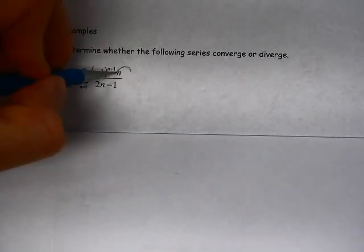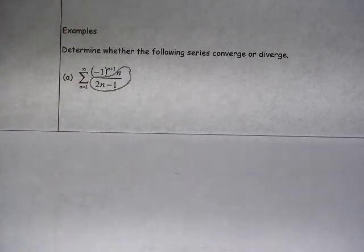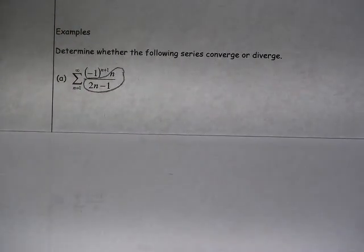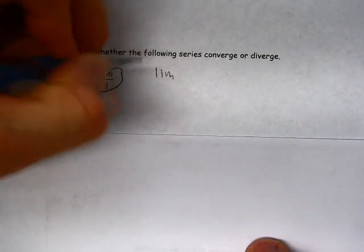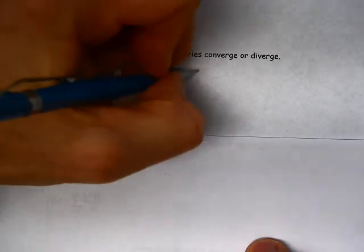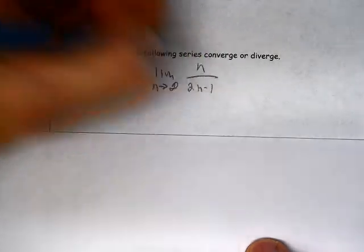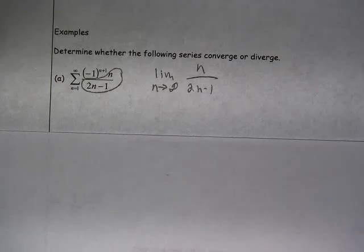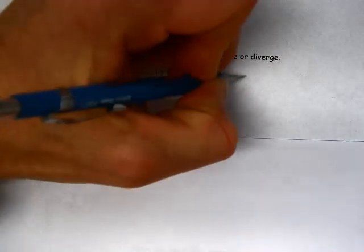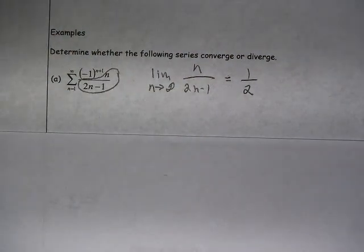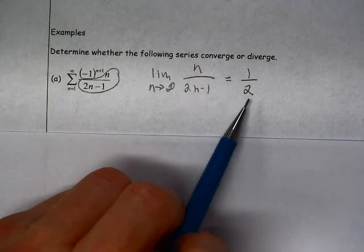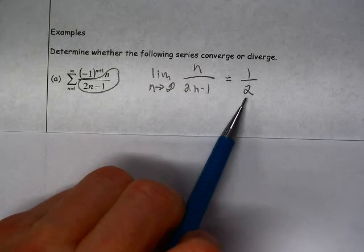So we're really talking here about this thing right here. So we can take a look at that. If we take a look at the limit as n approaches infinity of n over 2n minus 1, we can solve this limit using L'Hopital's or we can divide both numerator and denominator by n. But either way, we get 1 half. This limit of a sub n as n approaches infinity is not equal to 0.